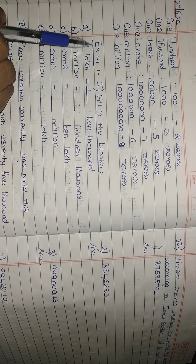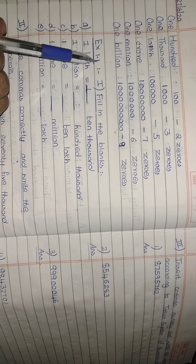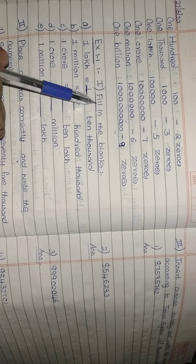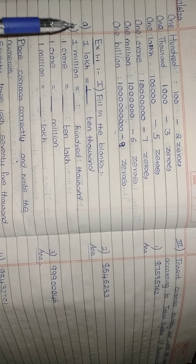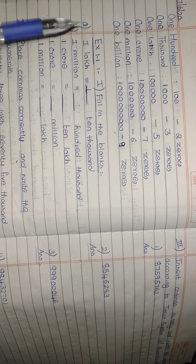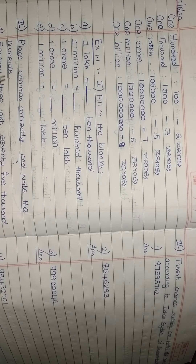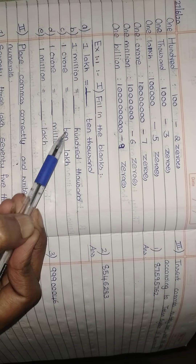With this information, let us enter into the exercise problems. All of you write Exercise 1.1, first main — Fill in the Blanks — underline it. You can see this in your textbook also; if you want, open your textbook to page number 12. You have Exercise 1.1 there. I am going to do four mains now, so copy the first main and pause the video.